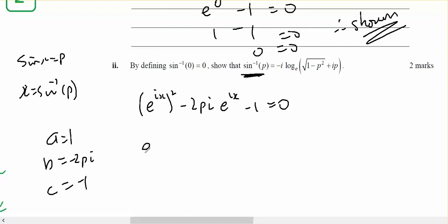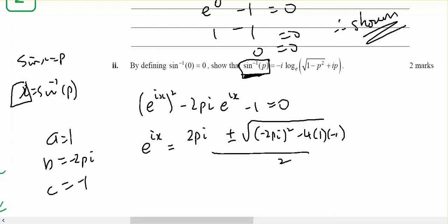So e to the ix equals... Keep in mind that solving for this is the same as solving for x. So I'd like to solve this for x. It's minus b, so 2pi plus or minus the square root of minus 2pi squared minus 4 times 1 times minus 1, all over 2.